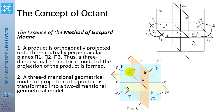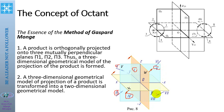The first octant is in front of plane V and above the horizontal plane. Behind V and below the horizontal plane is the second octant. Below the horizontal plane and in front of the vertical plane V is the fourth octant. Five, six, seven, and eight octants may also be identified. The figure shows the octants arrangement.